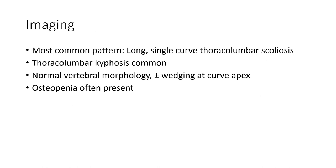Imaging: the most common pattern is a long single curvature, thoracolumbar scoliosis, and thoracolumbar kyphosis. Normal vertebral morphology is typical.